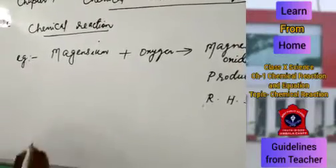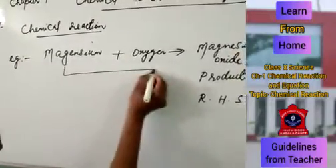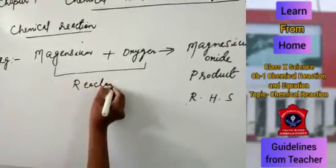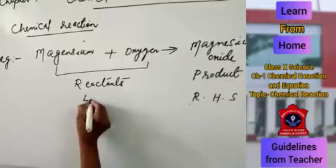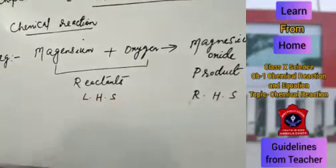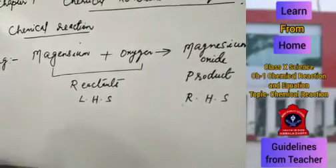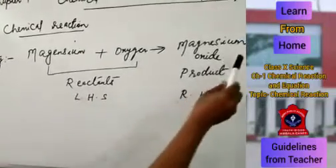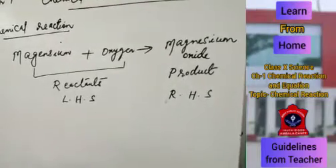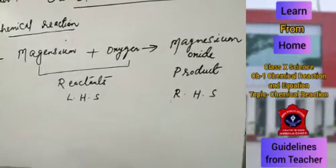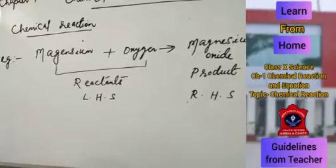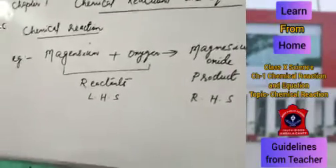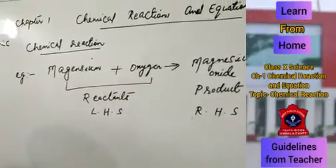The substances which are taking part in the chemical reaction are known as reactants. Reactants are placed on the left side of the chemical equation. If the reactants are more than one, we can use a plus sign. Similarly, if products are also more than one, you can use a plus sign. Here I wrote the chemical reaction by using the complete names of elements and the formula of compounds.